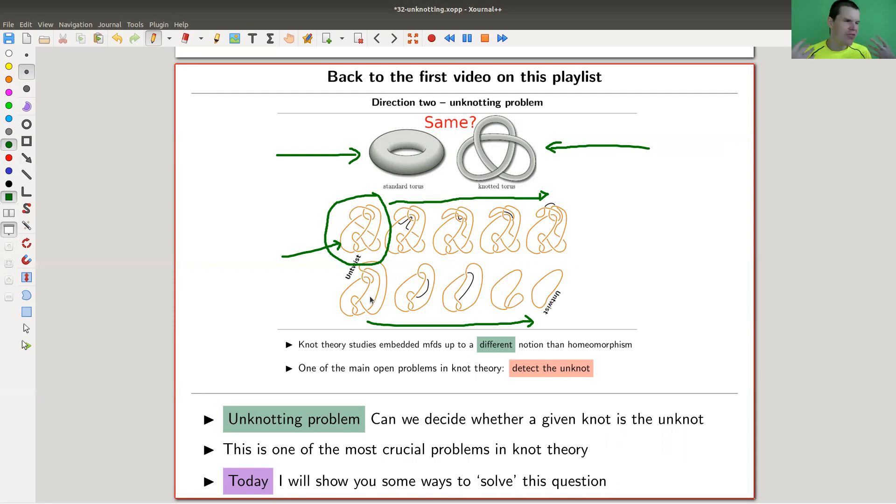Is that so easy? If you think about it from the outset, it's not so trivial, because there could be some really crazy type of Reidemeister moves, which even make the diagram more complicated until it gets simpler. It's not so easy to do this.